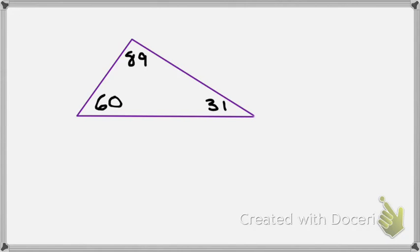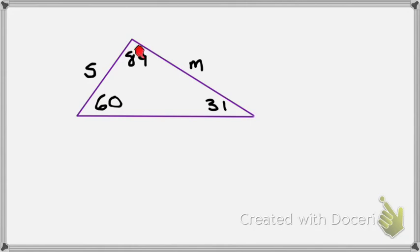A cool thing to know is that the smallest side of a triangle is always going to be opposite the smallest angle. So if 31 is my smallest angle, that side is going to be my smallest side. If this angle is 60, it's my medium angle, so this would be my medium length side. My biggest angle is 89 degrees, so that would be opposite my longest side. Therefore, all three sides would be different lengths — it's acute because all angles are less than 90, and scalene because all sides are different.